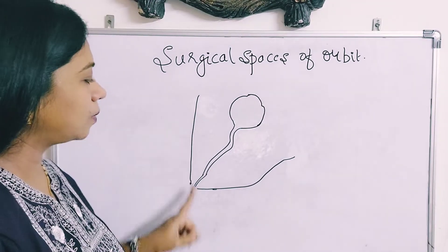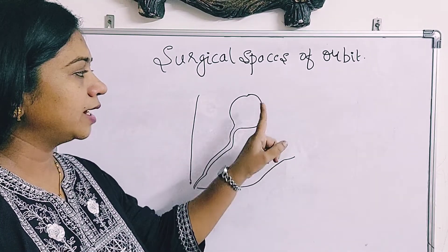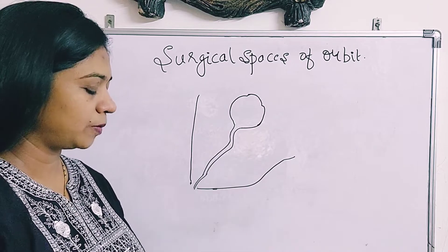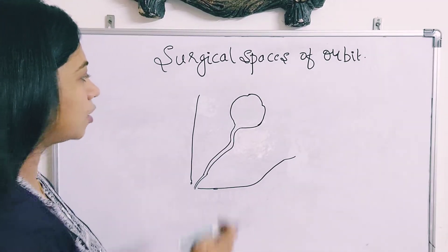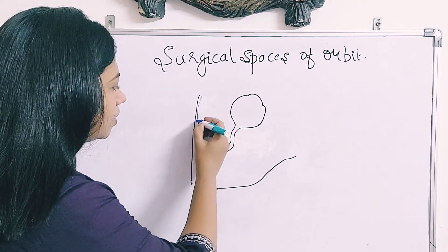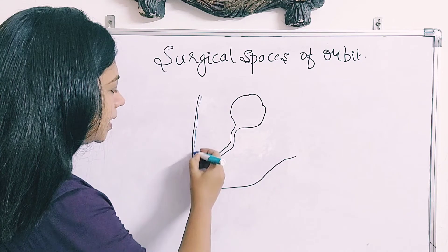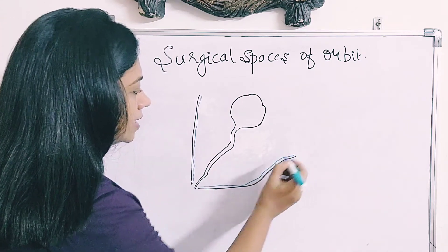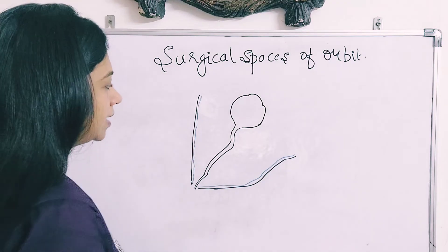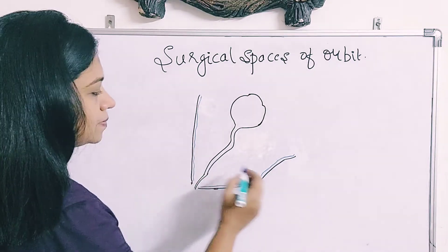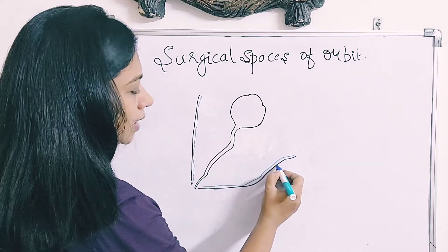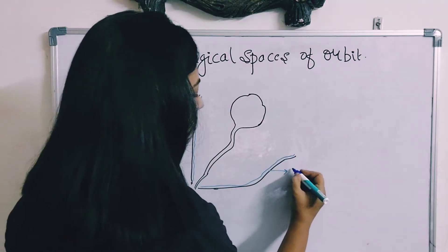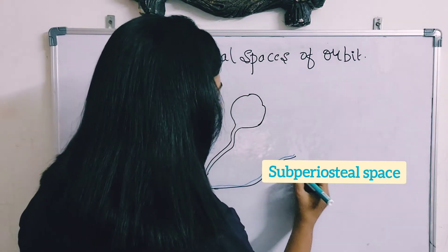This is the orbit — the bony orbit with the eyeball and the optic nerve situated inside. Inside this orbit, we have a very thin lining called the periorbita, which is covering the inside of this bony orbit. There is a potential space between the bone and the periorbita, and this space is called the subperiosteal space.